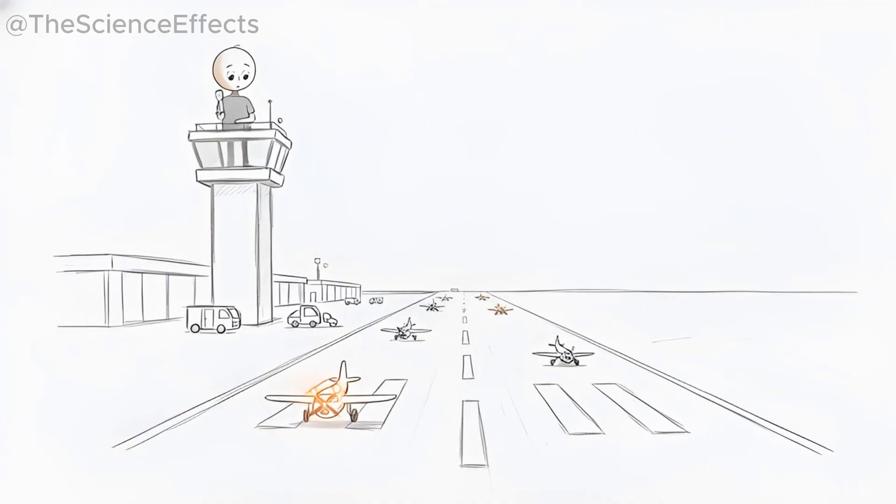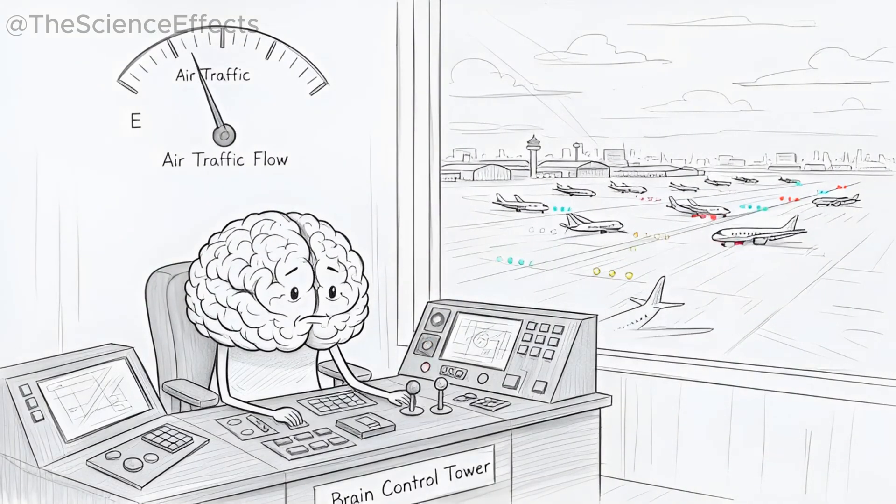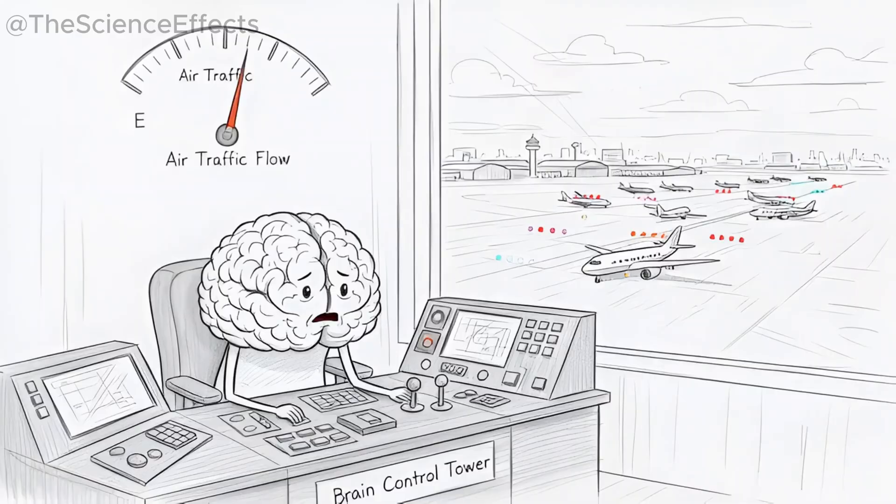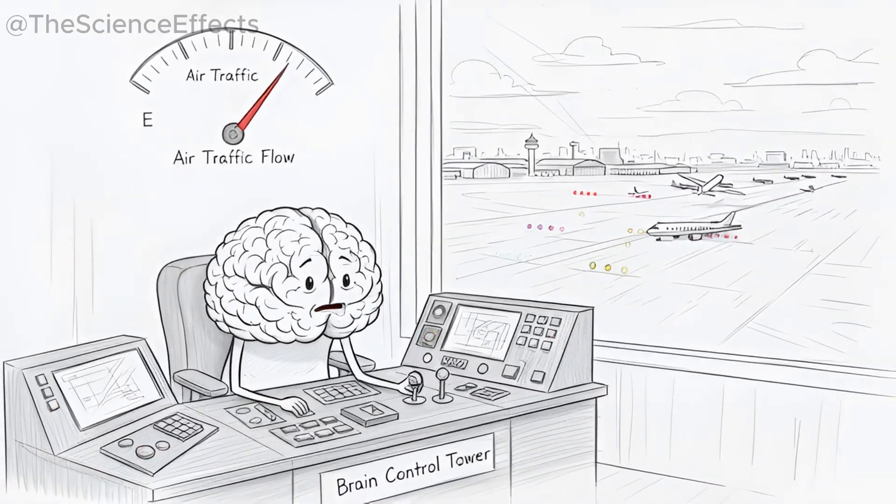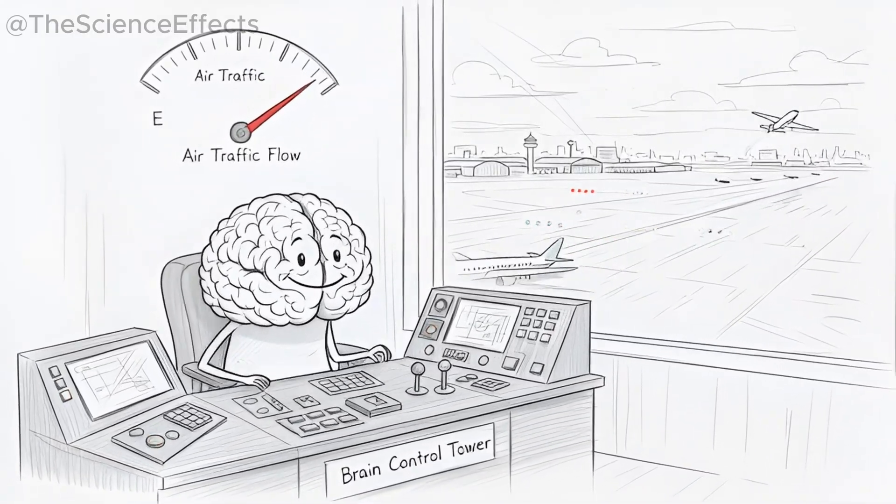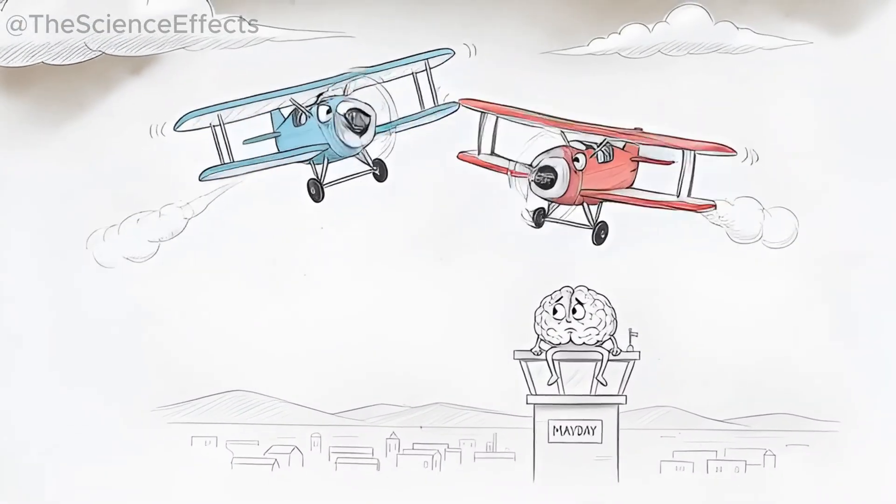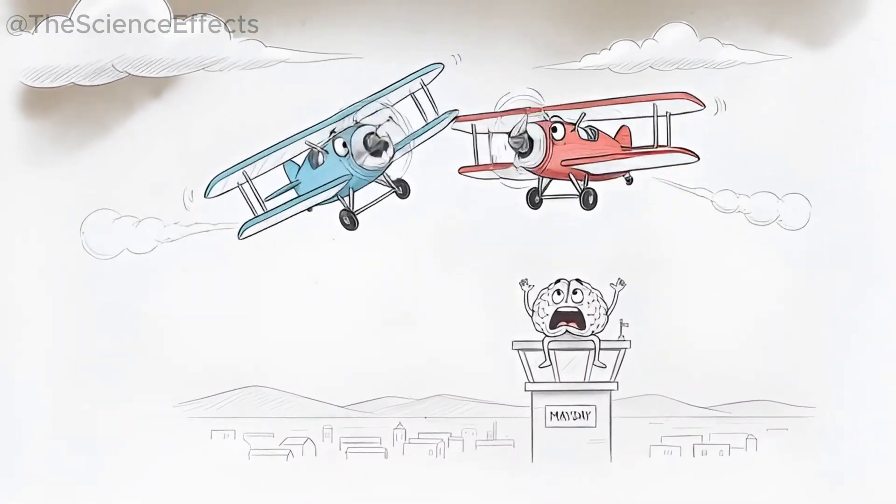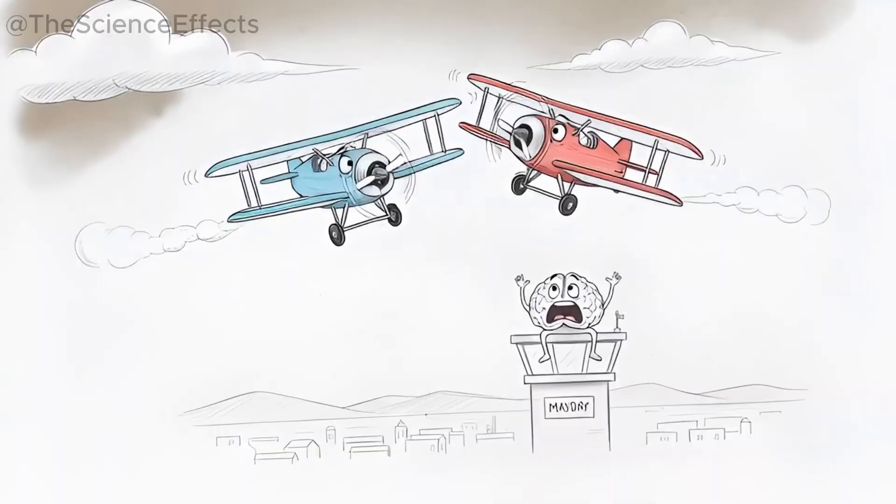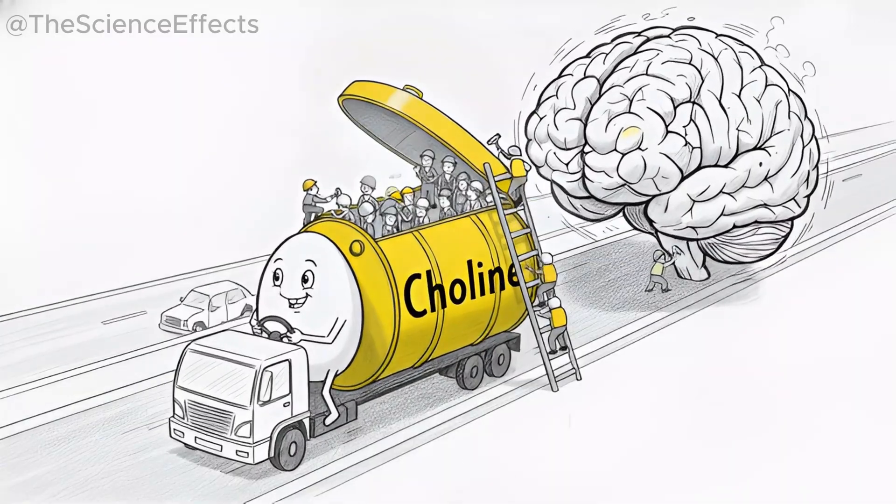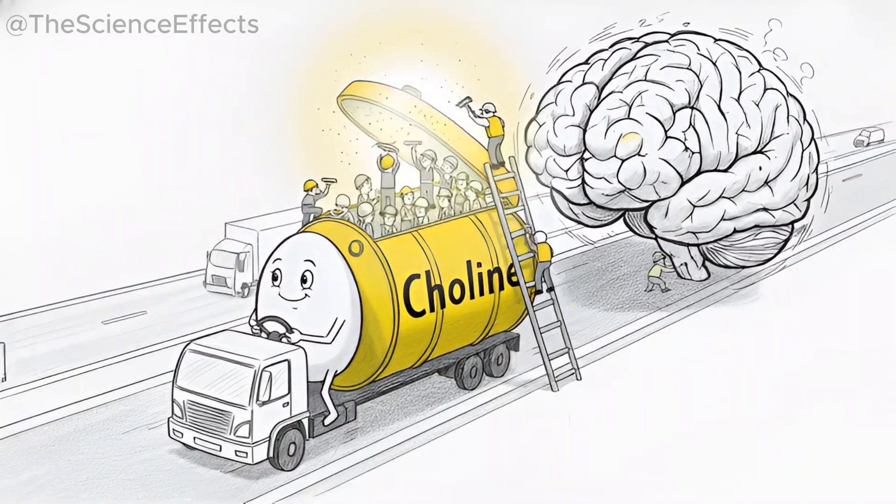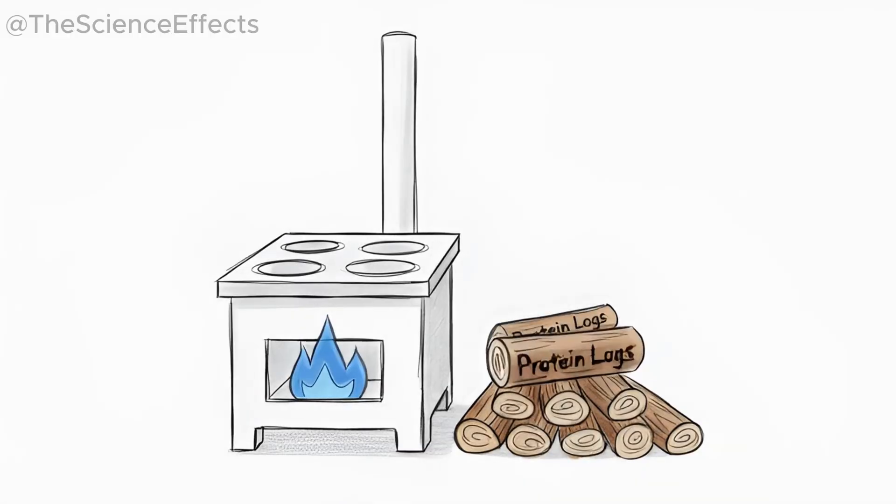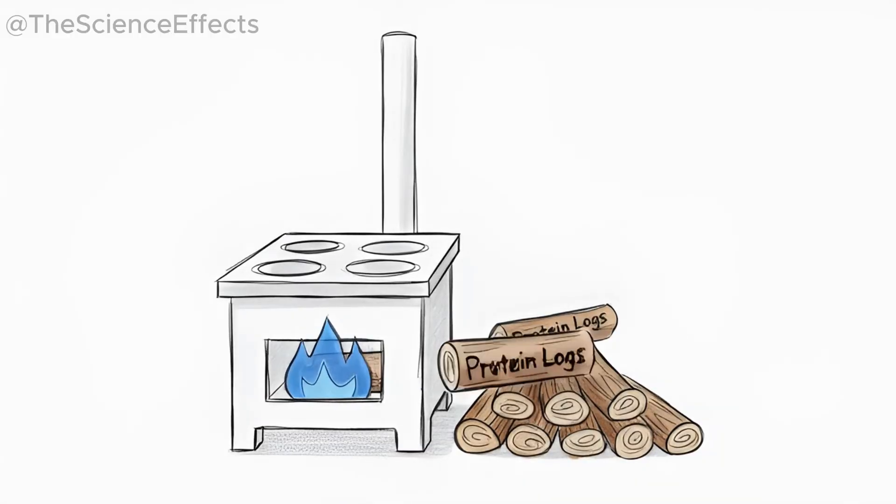One egg yolk delivers a huge dose of choline. Metaphor number two: your brain is like an airport. Everything depends on timing, coordination, and communication. Choline acts like the control tower. It sends signals, organizes flights, prevents chaos. Without enough choline, signals start bumping into each other, running late, or getting misdirected. Eggs rebuild the control tower every morning.